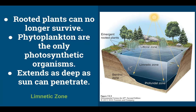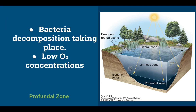The limnetic zone extends as deep as sunlight can penetrate. How much sediment is suspended in the lake determines how much sunlight penetrates, which in turn determines how many organisms can exist. Eventually when light can no longer penetrate, we have the profundal zone — low oxygen, nutrients are not easily recycled into the food web, and mostly bacteria decompose detritus that falls from above. As a result, it doesn't support many large organisms.